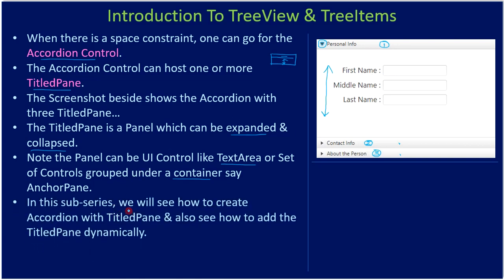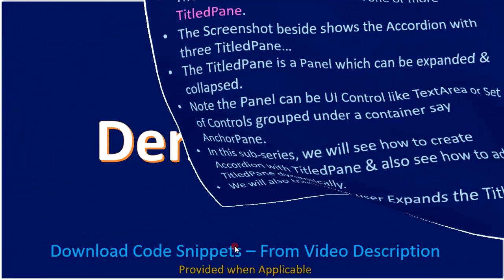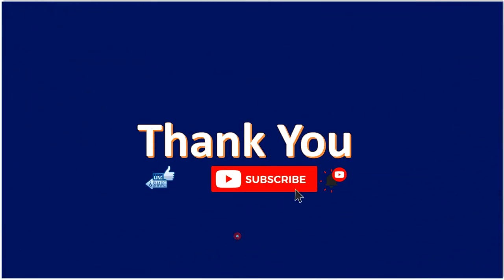In this sub-series we will see how to create an Accordion with TitledPanes, and also how to add TitledPanes dynamically at runtime using supporting controls. We will also track when the user expands or collapses a TitledPane and handle that event. There is no demo in this video. Thank you for watching, bye.